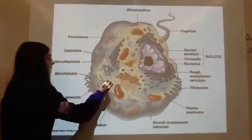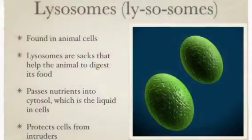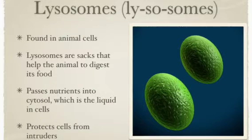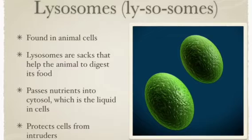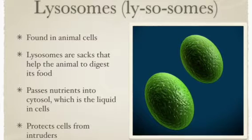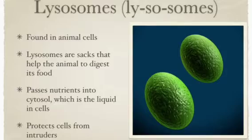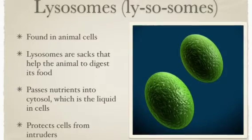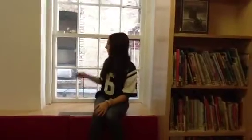These are the lysosomes. Lysosomes are found in animal cells. Lysosomes are the sacs that help the animal to digest its food. They pass nutrients into the cytosol, which is the liquid in cells. They also protect cells from intruders. If this room were an animal cell, the lysosomes would be like the windows because they protect against intruders getting inside.